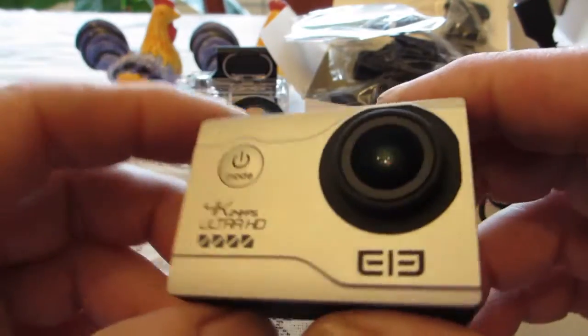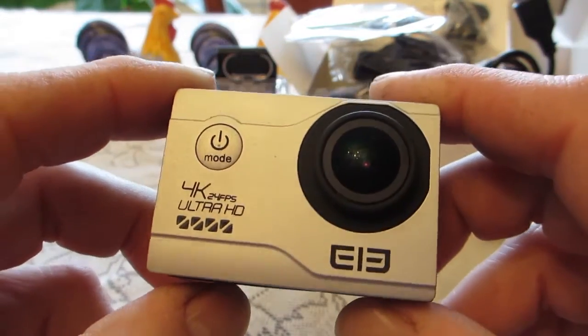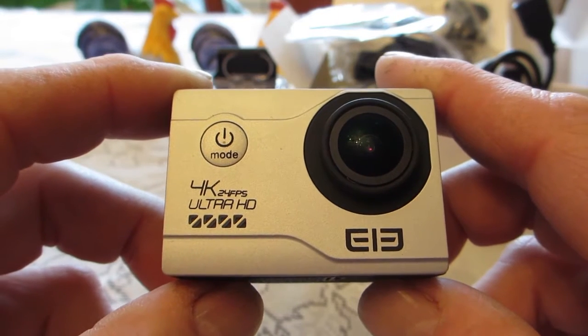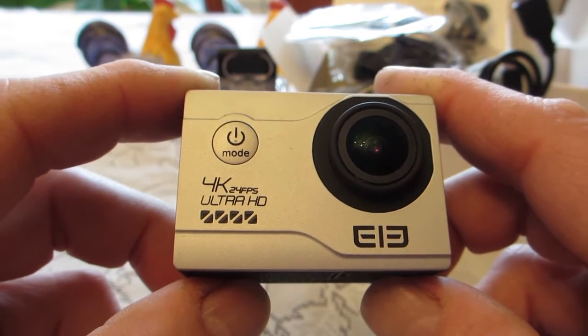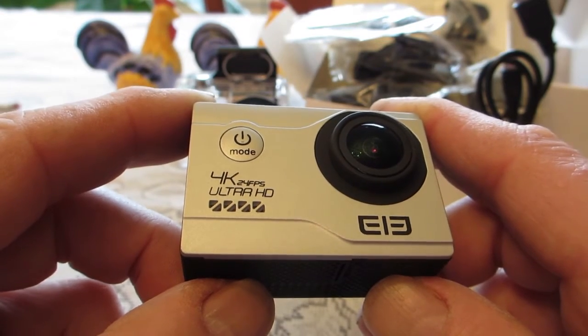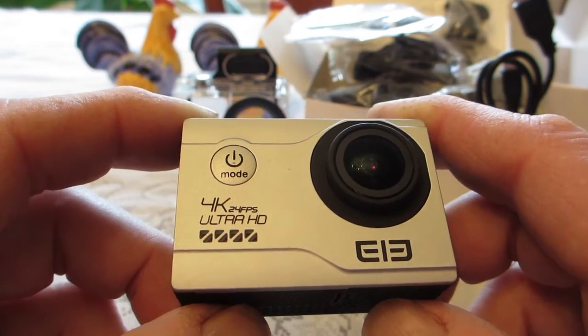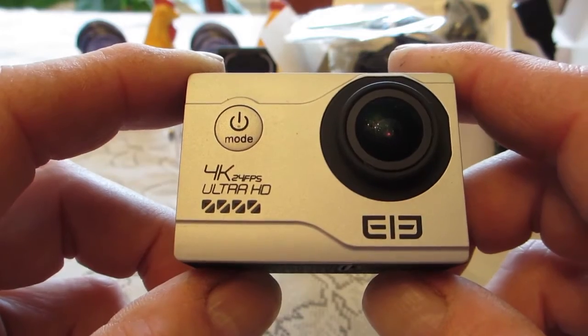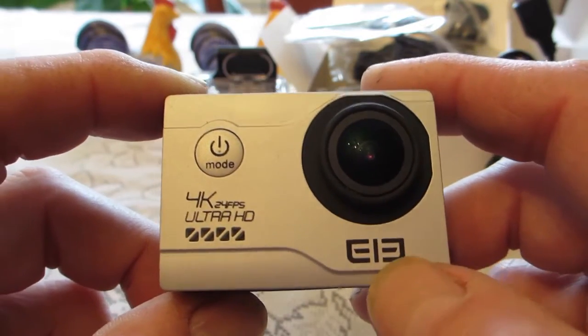And here we have the camera. That looks pretty good, that's a nice design, nice style. It says 4K, 24 frames per second, Ultra HD, and that is the Elephone logo.